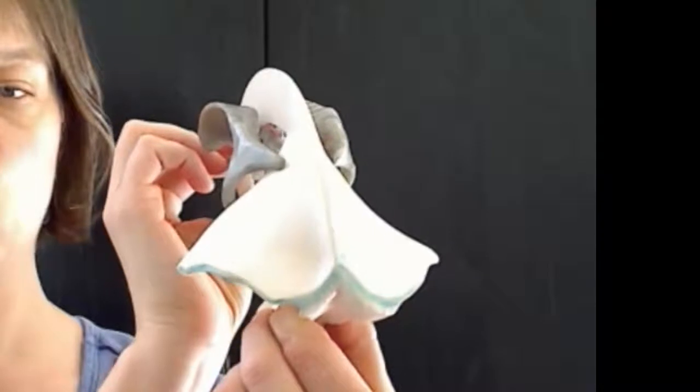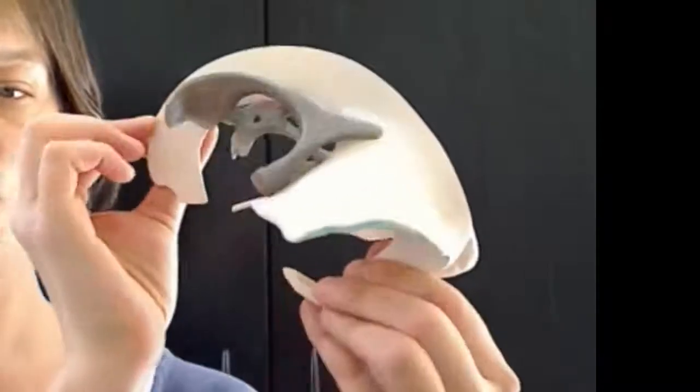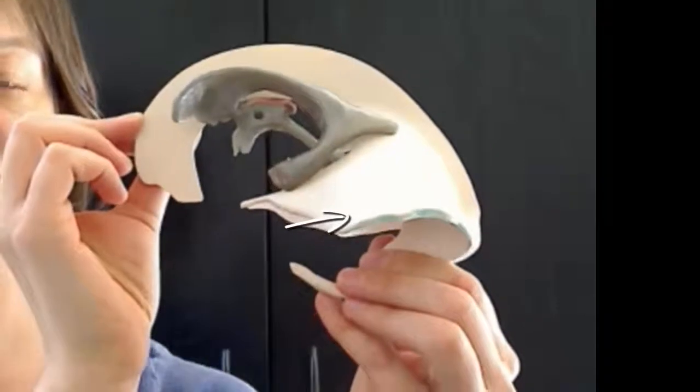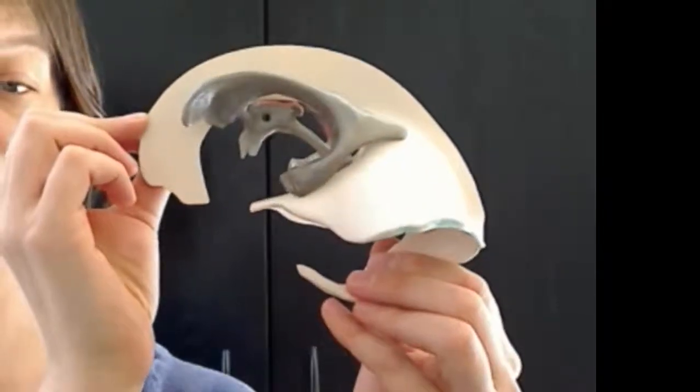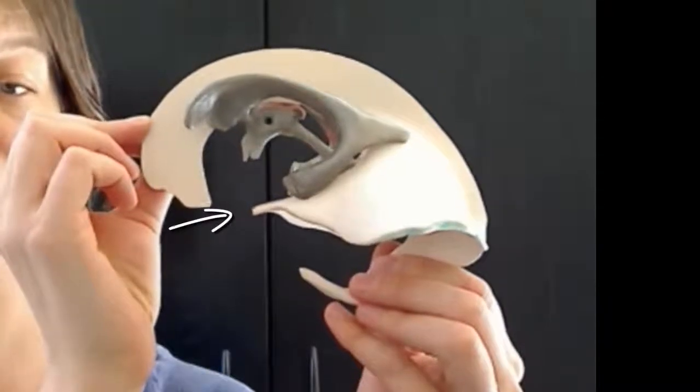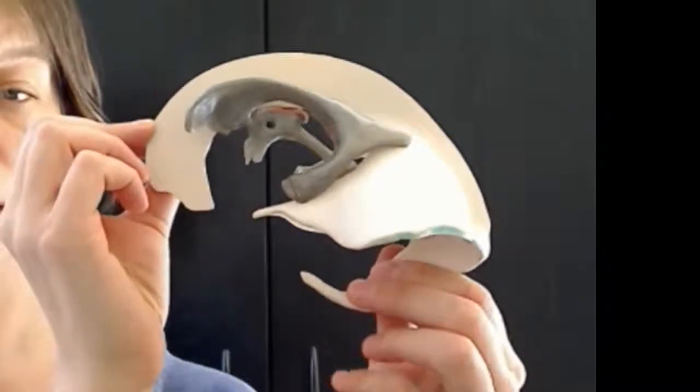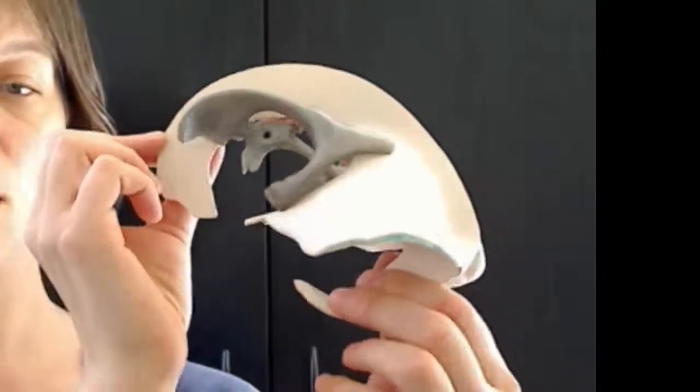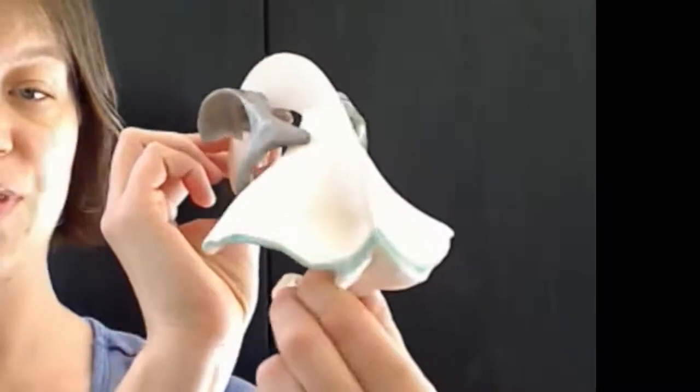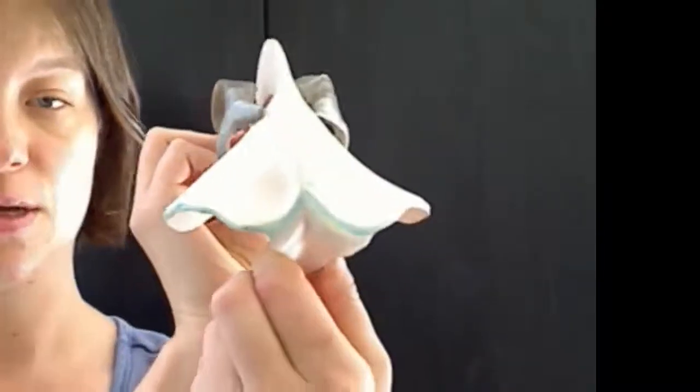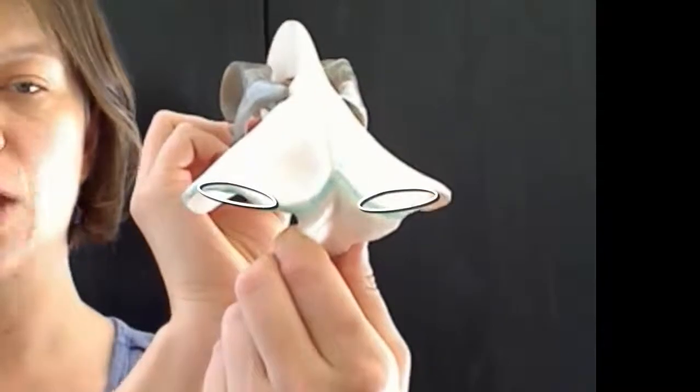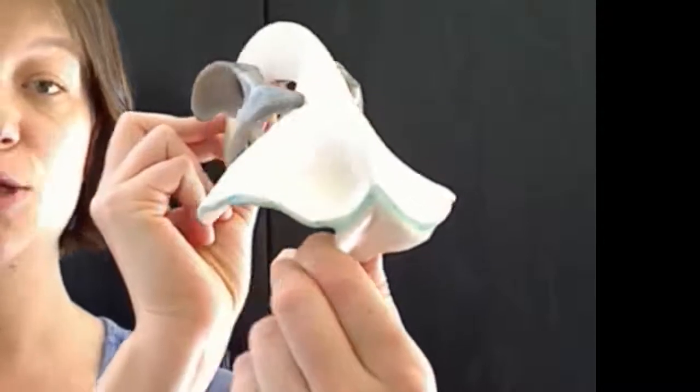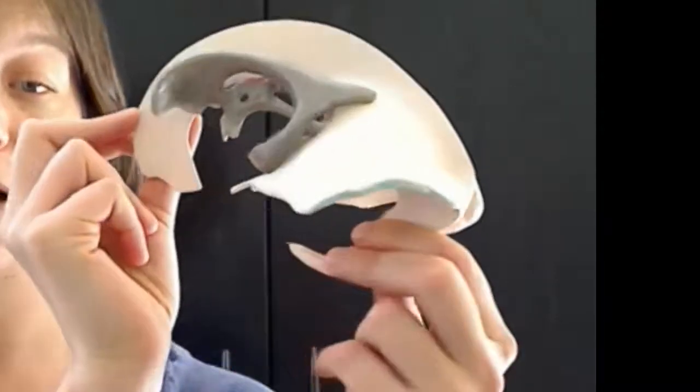And then we have the tentorium that runs horizontally. And the anterior tips of the tent anchor on the clinoid processes of the sphenoid on either side of the sella turcica. And then they run along the petrous ridge of the temporal bone, and then along that horizontal ridge of the occiput. So as we mentioned in the tour of the cranium, the falx and the tent intersect just inside the external occipital protuberance of the occiput.